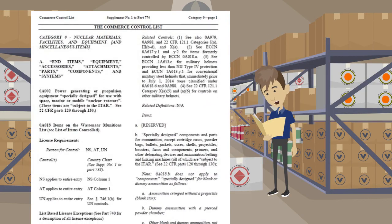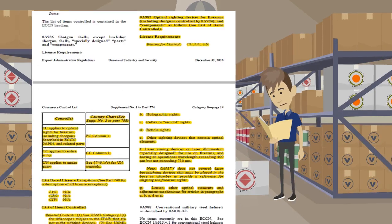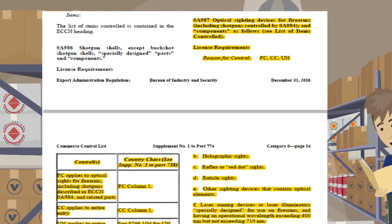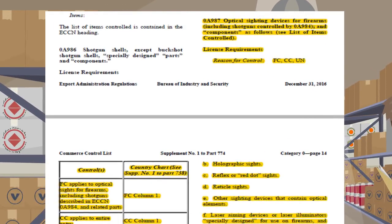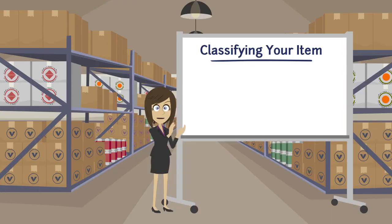Looks like it would be in Product Group A. Here it is — 0A987. A screenshot of category 0 appears and the page turns to 0A987, highlighted in yellow. Well done! Now you know the basics of how to self-classify an item.